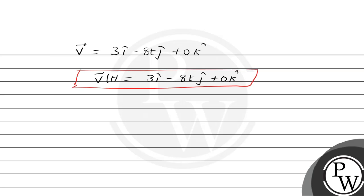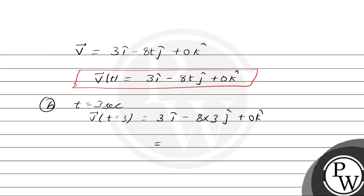In part b, we were required to find the velocity vector at time t equals 3 seconds and its magnitude. So the velocity vector at t equals 3: we substitute t equals 3 everywhere we find t. So 3î minus 8 × 3 ĵ plus 0k̂, giving us 3î minus 24ĵ plus 0k̂.